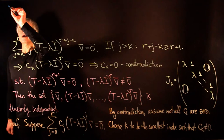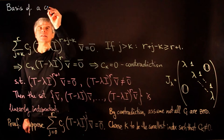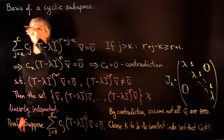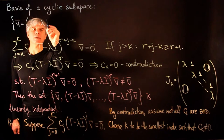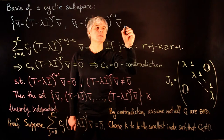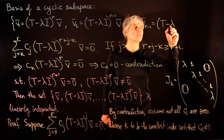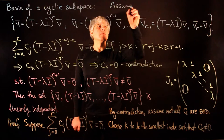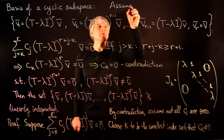Having proved that these vectors are linearly independent, we obtain that they form a basis of the cyclic subspace. We list these vectors in reverse order: V1 is (T minus lambda I)^R V, V2 is (T minus lambda I)^(R-1) V, V_{R-1} is (T minus lambda I)V, and V_R is our original vector V. We assume that (T minus lambda I)^(R+1) V equals zero.